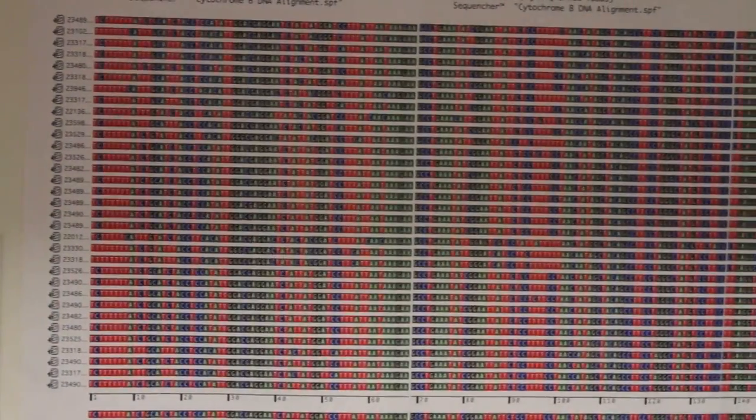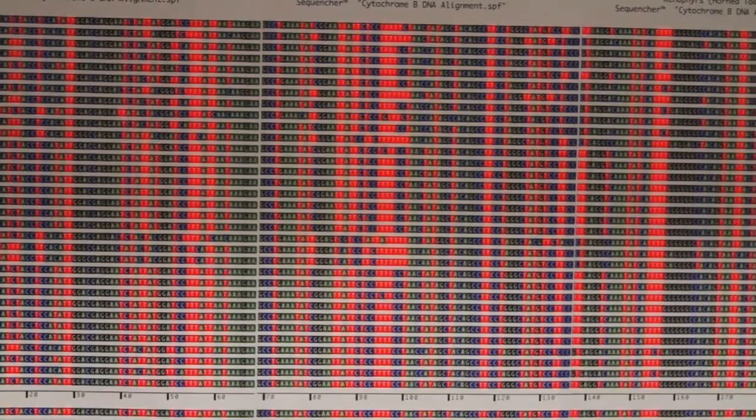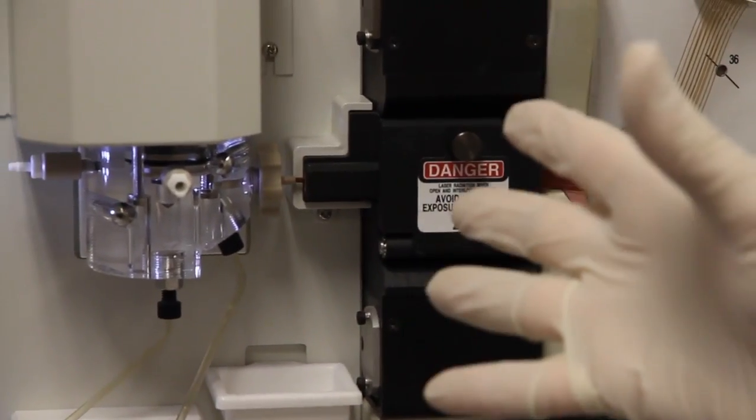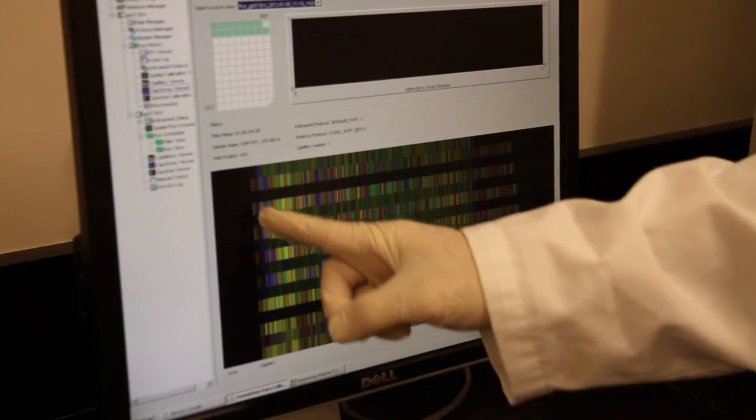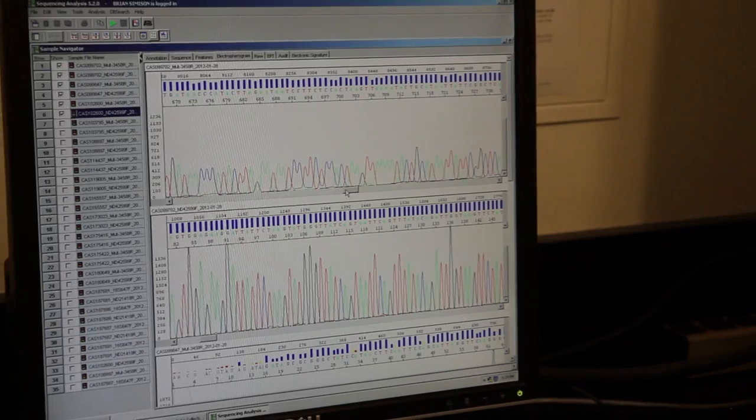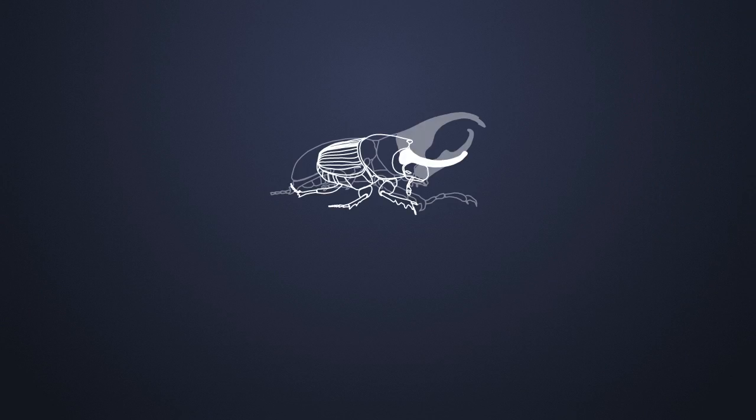So we also need to add special nucleotides that are tagged with unique colors or dyes. And they get incorporated in these millions of copies along the length. And then this will eventually be run over a DNA analyzer that will actually see these different colors and tell you the sequence of the DNA.